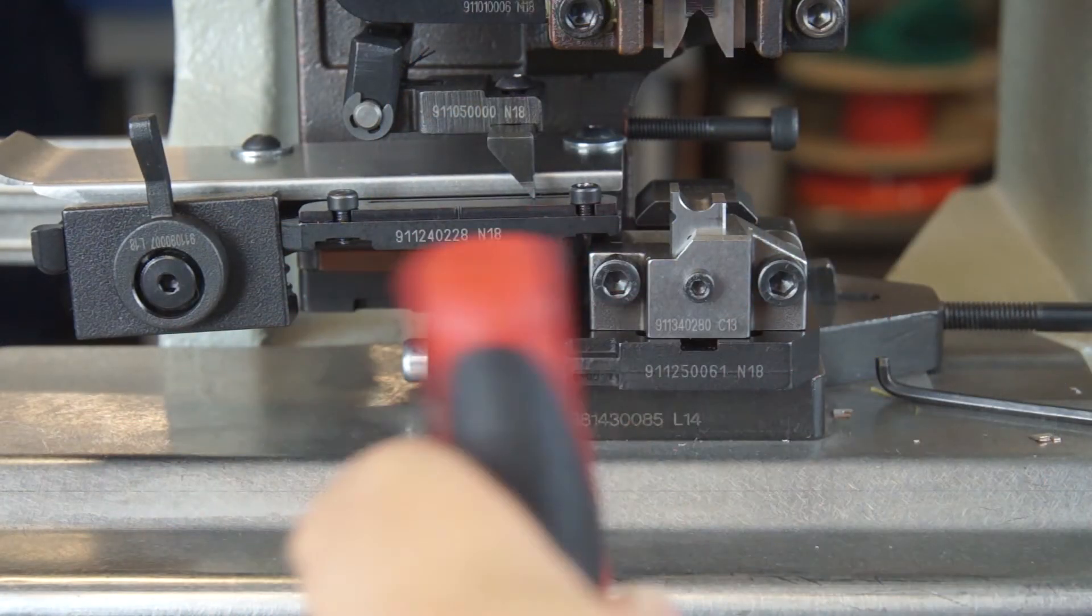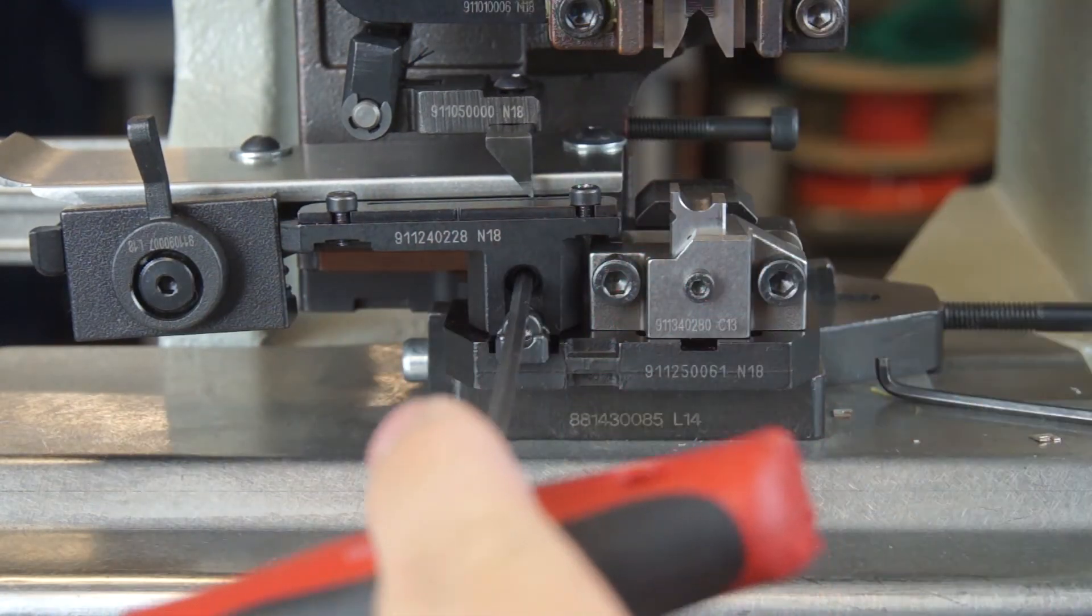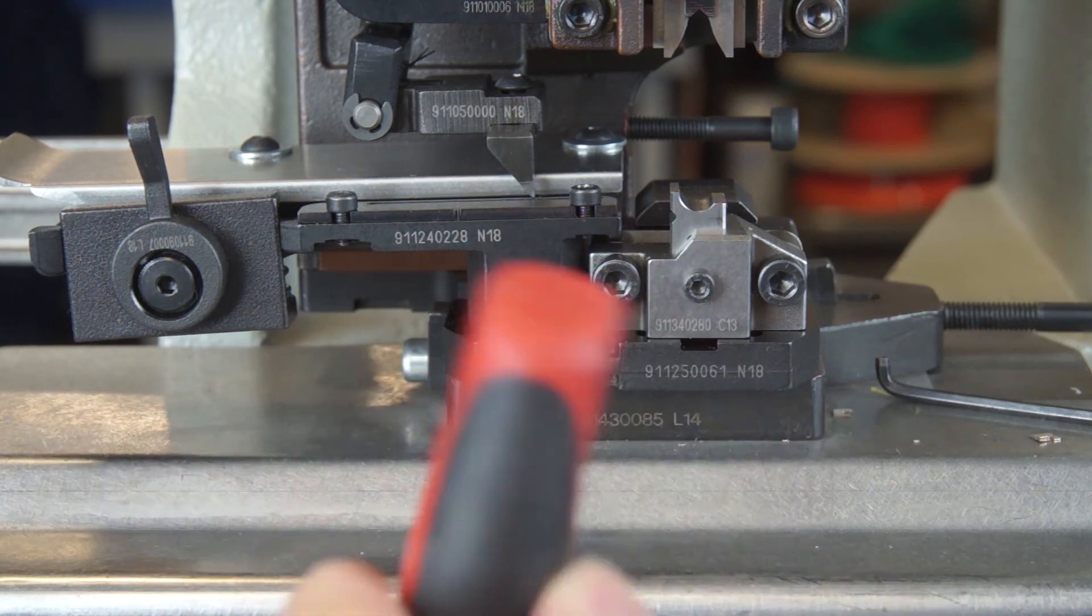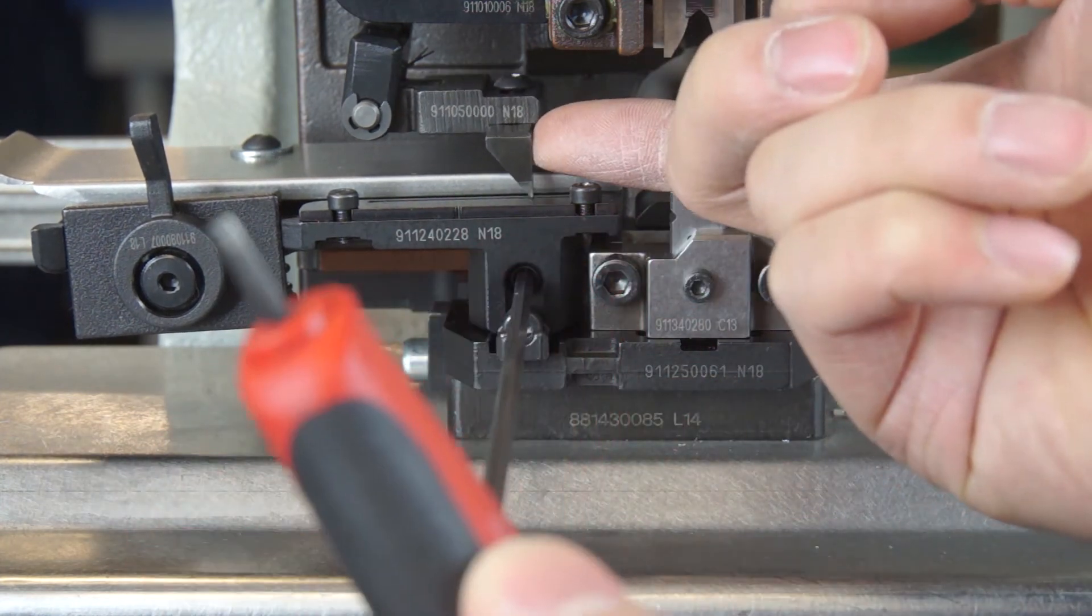To move the slide forward and back, take a 3mm hex wrench and turn the screw above the locking wedge. Turning the screw clockwise will move the slide closer to you, and turning it counterclockwise will move it further away.